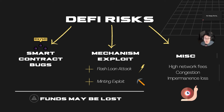Other miscellaneous risks include high network fees and congestion. On Ethereum, transaction fees can be high and affect your profitability on these platforms. Congestion means transactions can take hours or never happen unless you pay a higher gas price, though we're not facing major congestion issues at the moment.